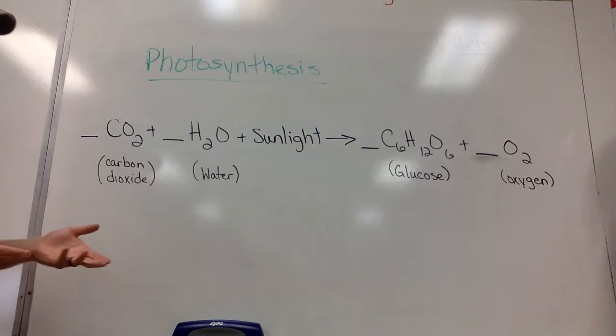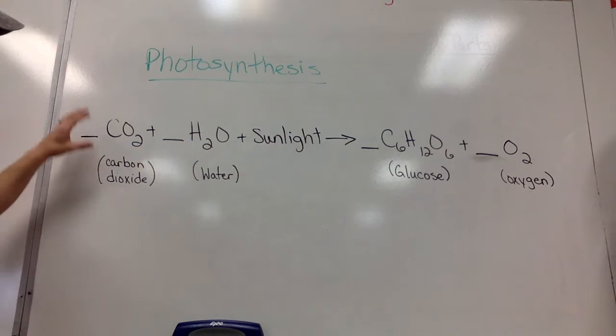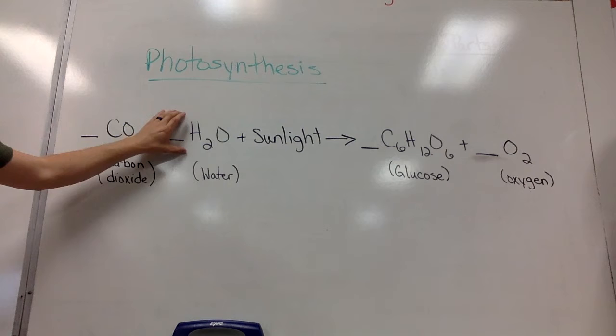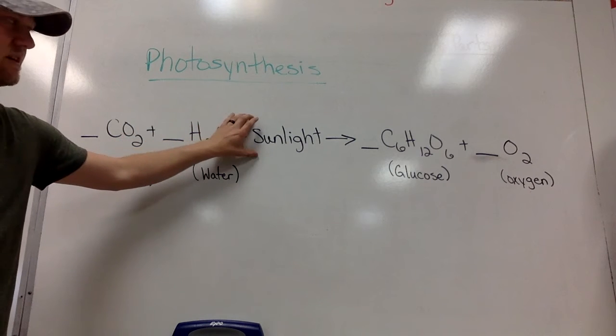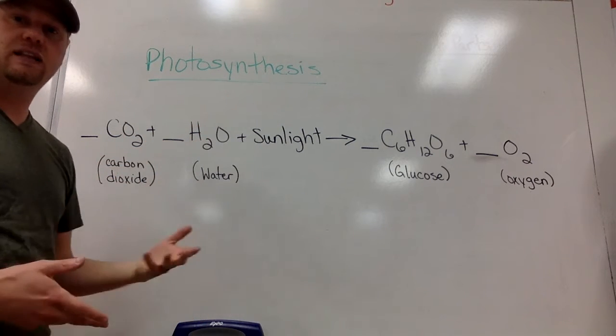But basically, what it comes down to is this. In order for a plant to make its own food, it needs three ingredients to do that. So, it's got to have carbon dioxide, which is CO2, water, H2O, and then some sort of sunlight or sun energy or light energy to make this happen.